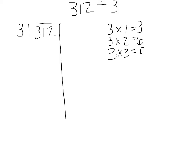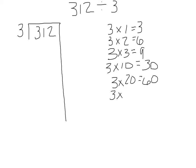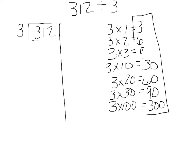Then we use what we've learned about patterns and place value: 3 times 10 is 30, 3 times 20 is 60, 3 times 30 is 90. Sometimes we can stop there, but we look at our dividend — the digit in the hundreds place equals the divisor, so we know we can do 3 times 100 is 300. If the dividend were larger, we could continue to 3 times 200 or 3 times 300, but students will realize when they compare 300 to the dividend that that's as far as they need to go.